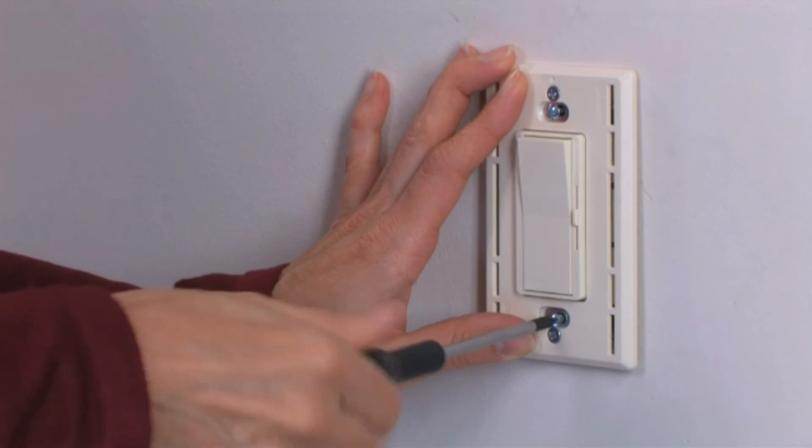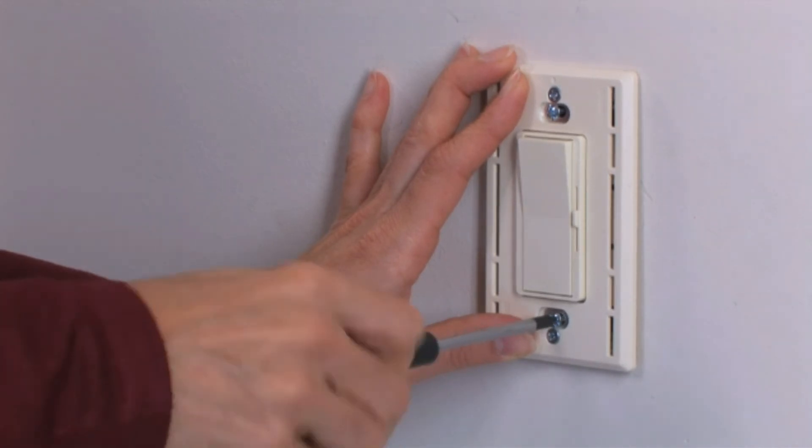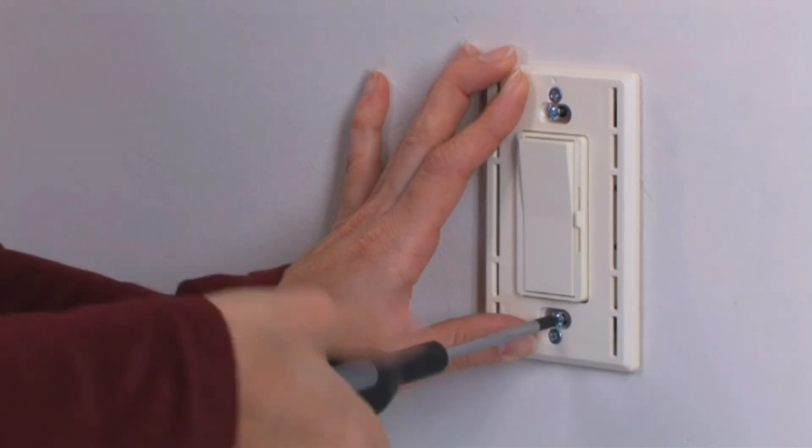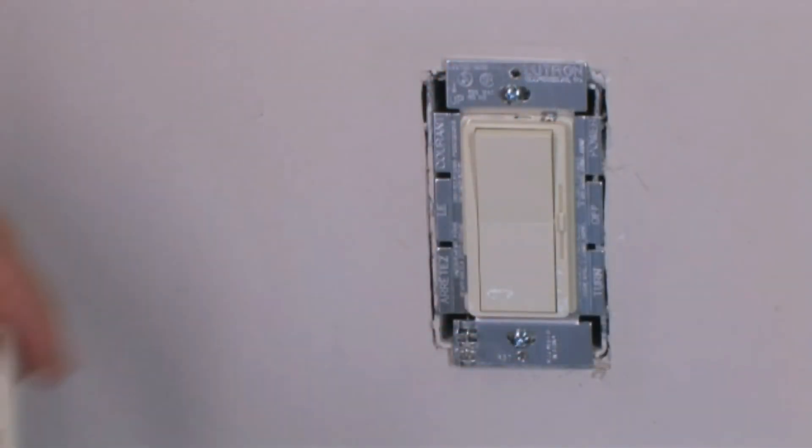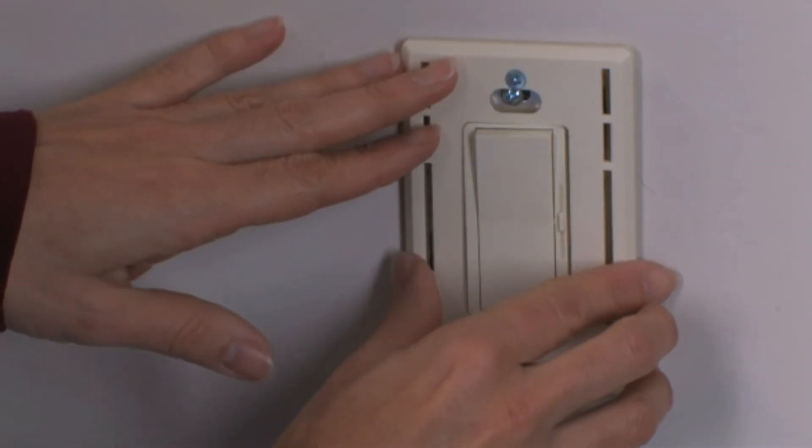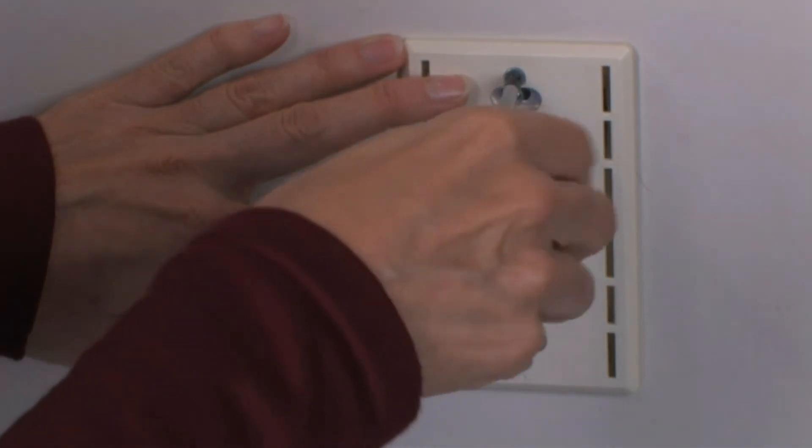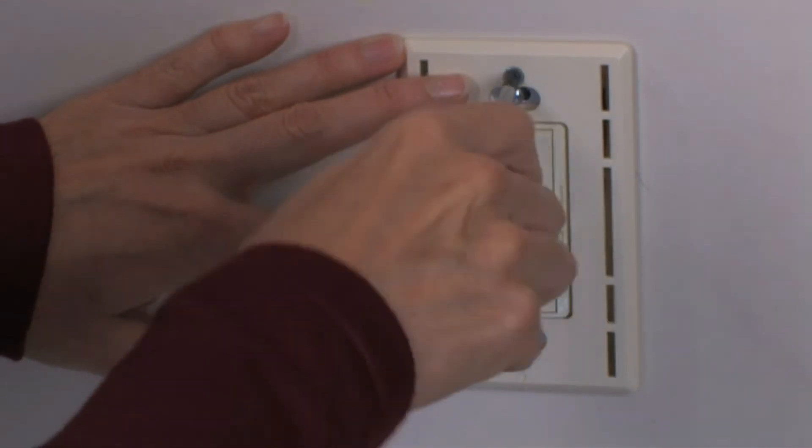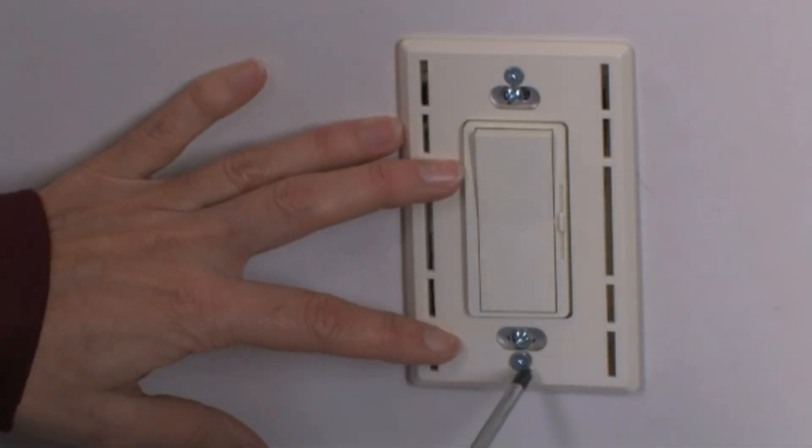Now you can mount your dimmer to the wall using the screws included with your dimmer and a Phillips head screwdriver. If you didn't attach your wall plate adapter before installation, place it over the dimmer using the provided screws, making sure that it's level before securing it.